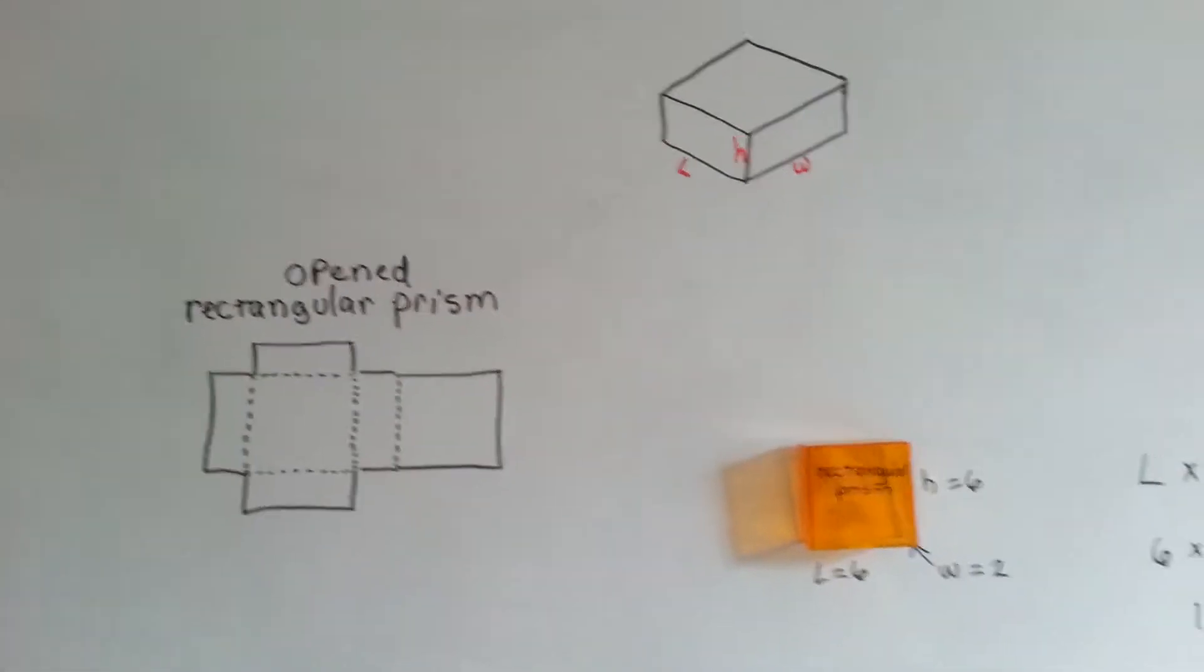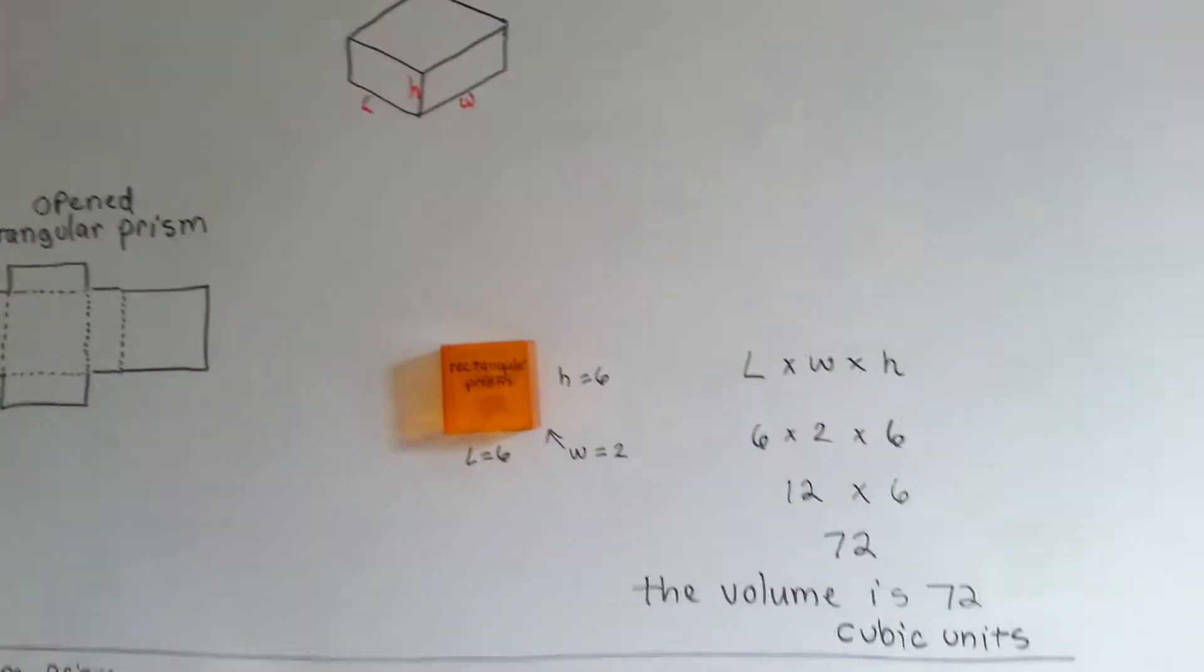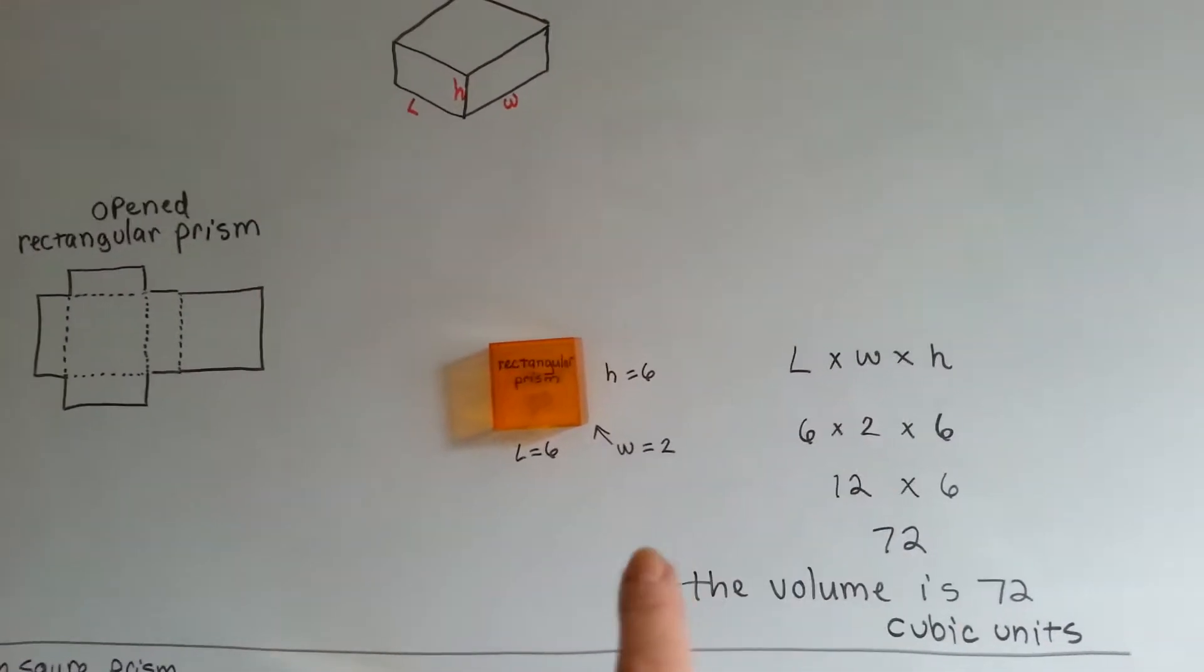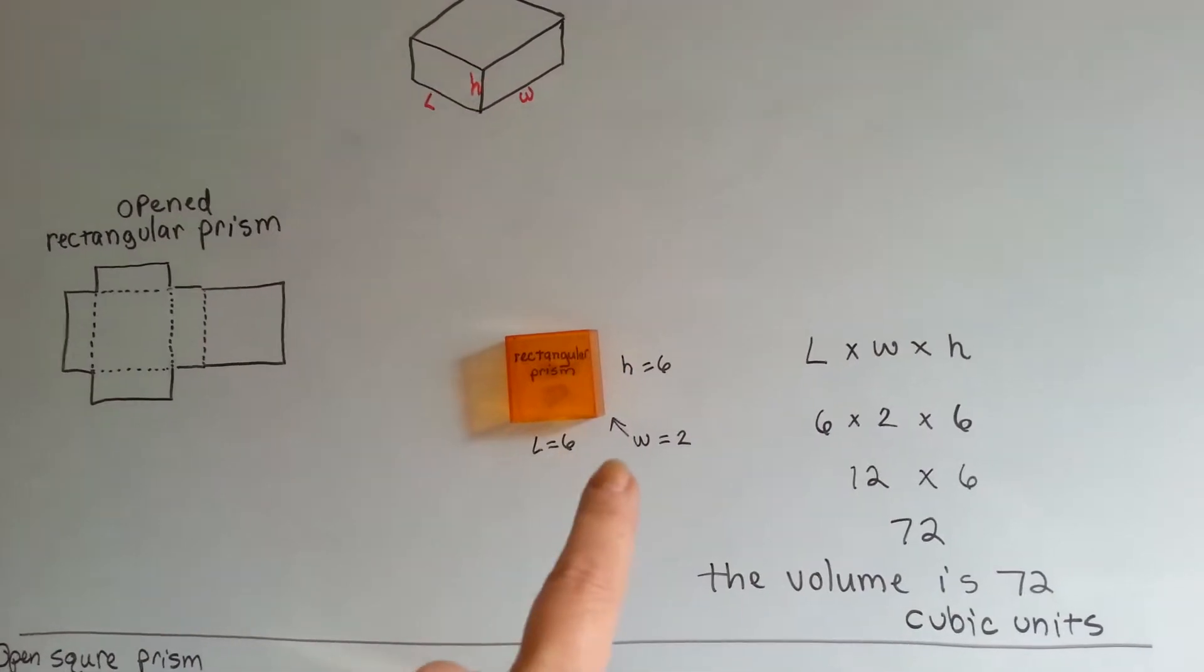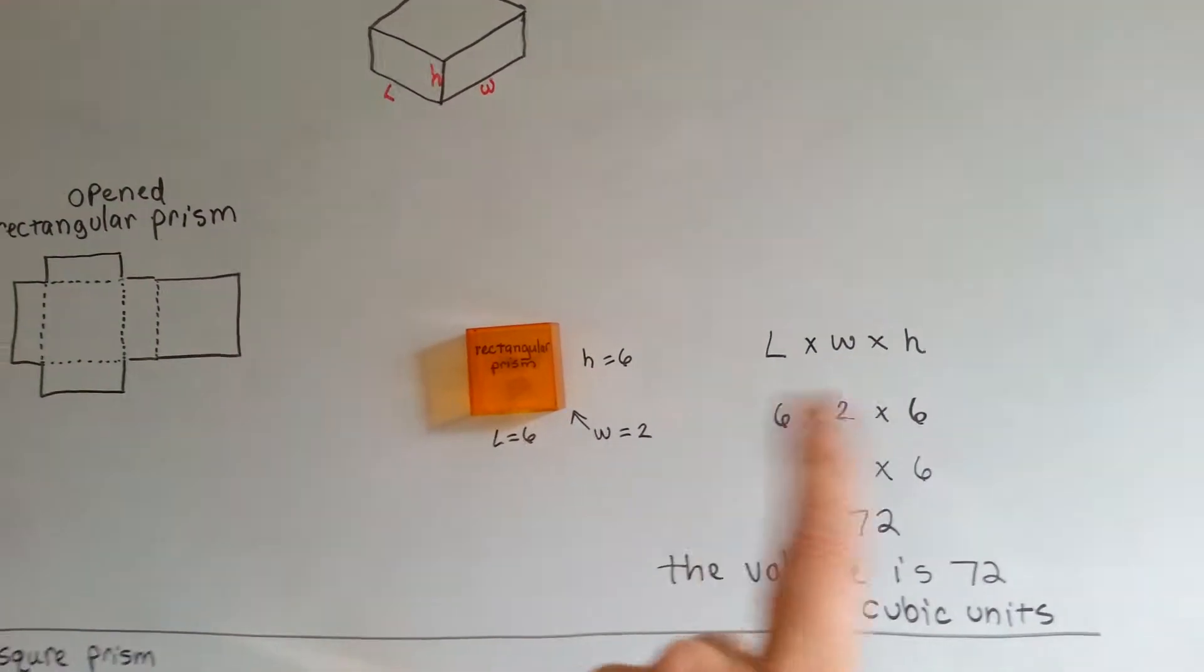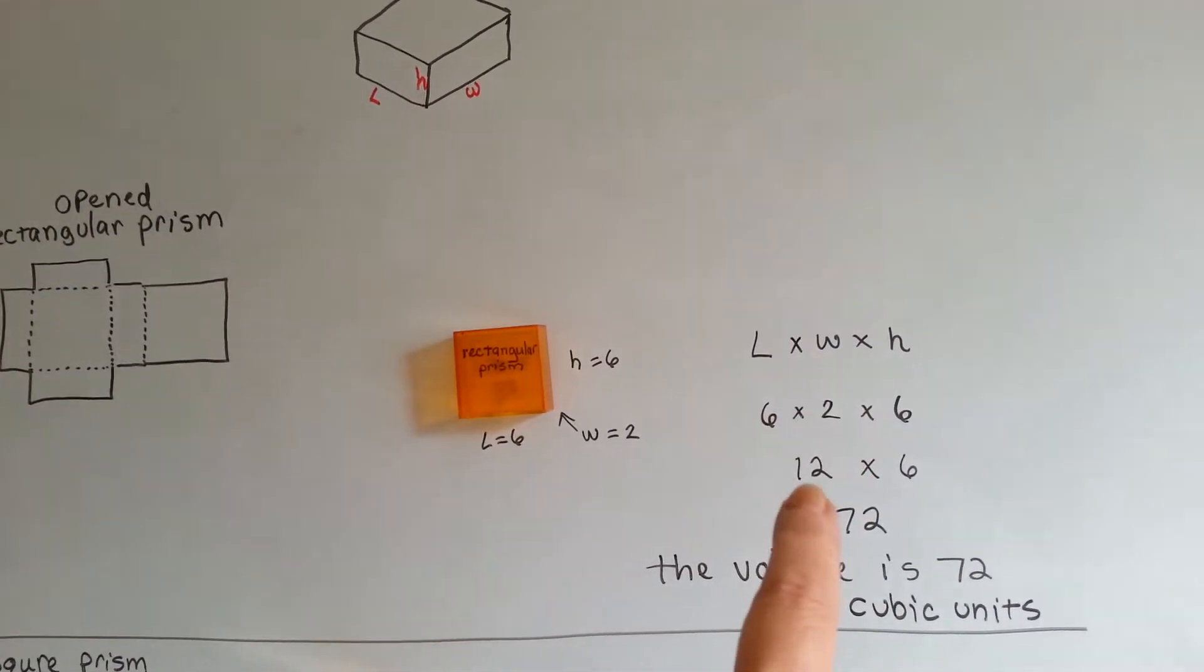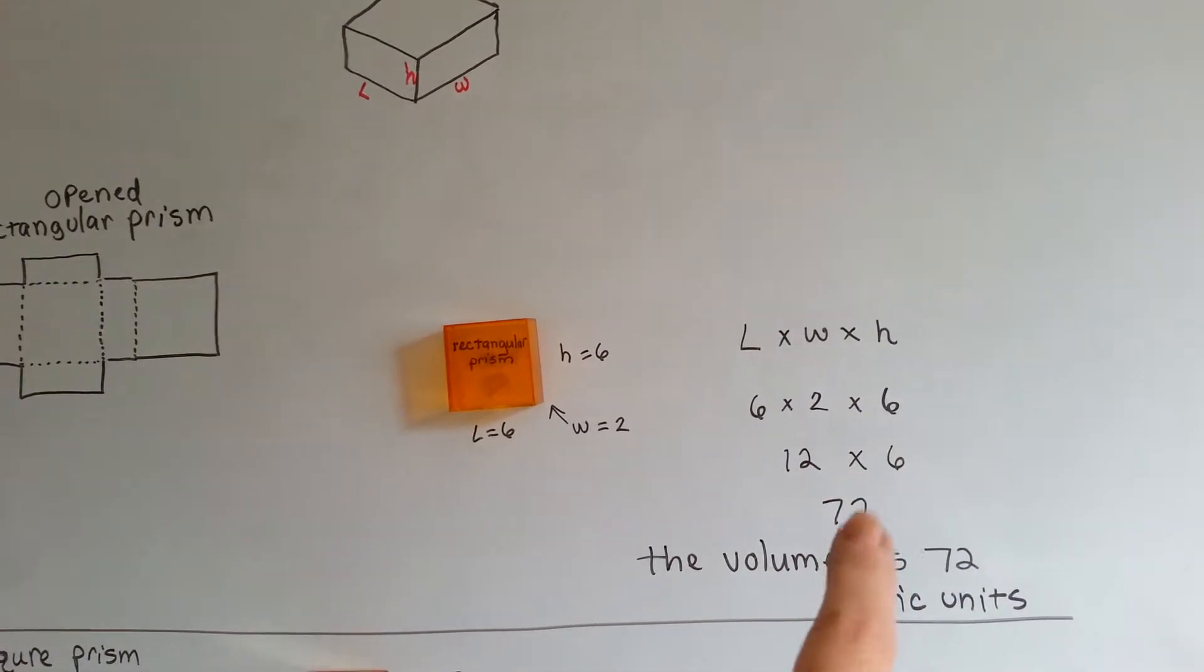To find the volume of this, all we have to do is do length times width times height. If the length is 6 and the height is 6 and the width is 2, we just multiply those. 6 times 2 is 12, 12 times 6 is 72.